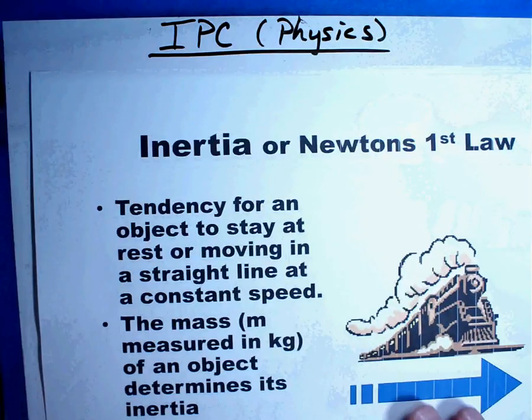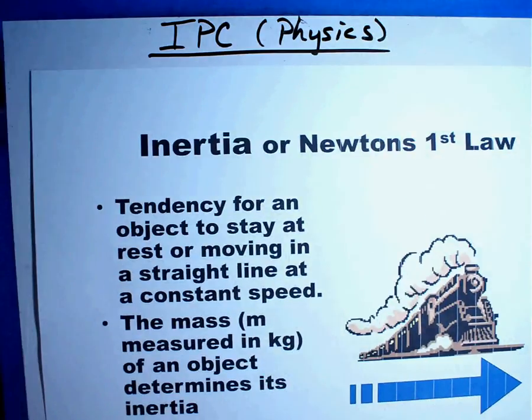Now along with Newton's first law, there's inertia, and there's the definition for it. The tendency for an object to stay at rest or moving in a straight line at constant speed. The mass, m, measured in kilograms of an object, determines its inertia.